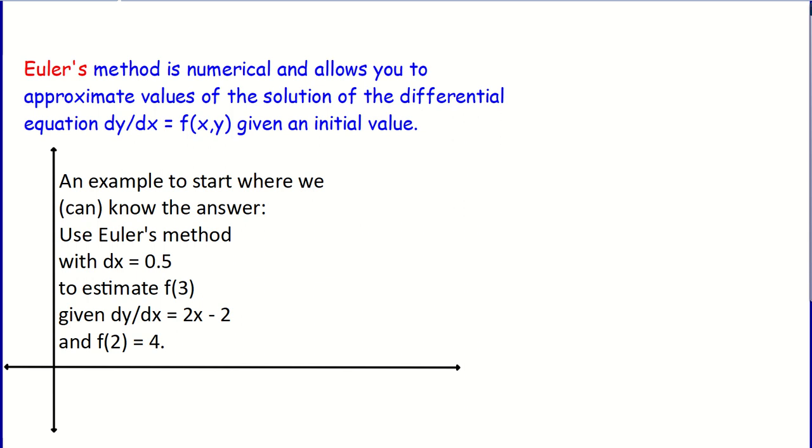We're going to start with a problem that we already know the answer to, just to see how it works, and then move on to something more interesting. The first one says use Euler's method with dx or change in x equals 0.5 to estimate f(3) given that dy/dx equals 2x minus 2 and f(2) equals 4. I'm going to make a table starting with my x value, and then with the x value there's a y value. There's dy/dx, which is the derivative at that point.